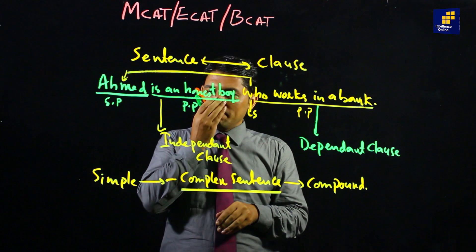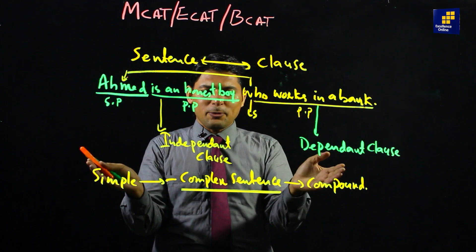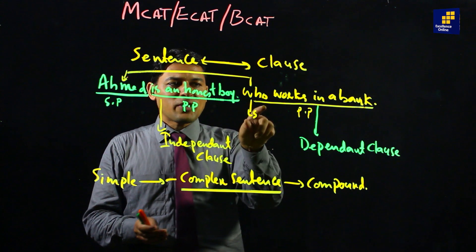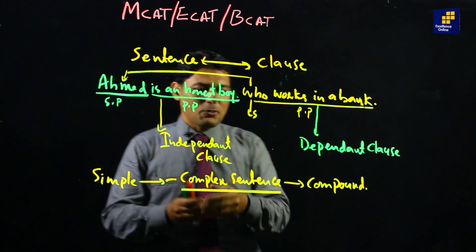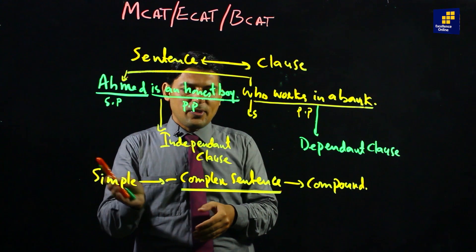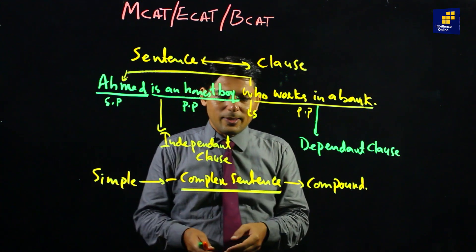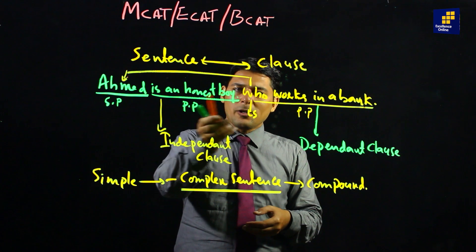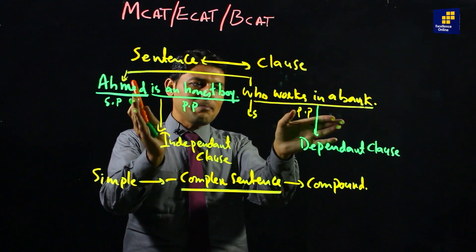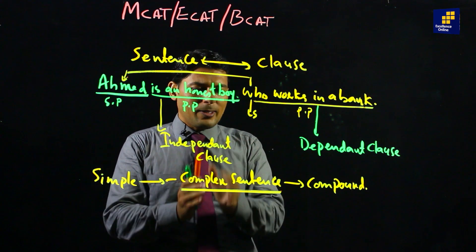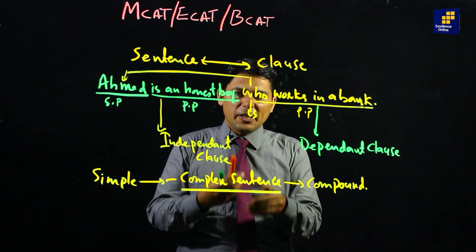A clause has a subject and predicate — you can see subject and predicate used together. In compound sentences, linking words are used. For complex sentences, the combination of dependent and independent clauses merged together will form complex sentences. We will have an example of this.